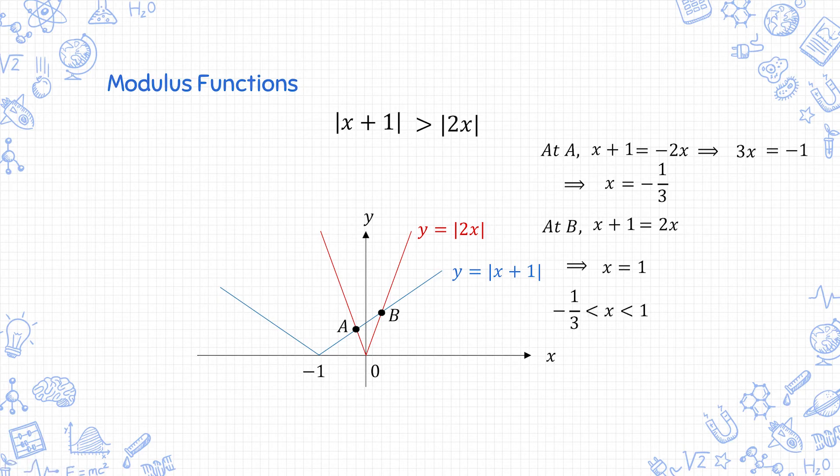And the solution is therefore that x is between negative 1 third and 1 because this inequality, the mod x plus 1 is greater than mod of 2x when x takes on values in between a and b. And therefore this is your solution.